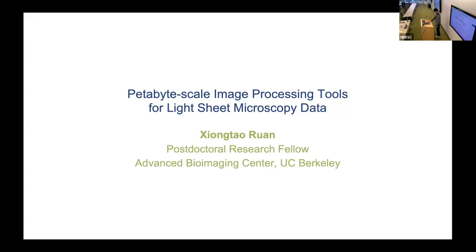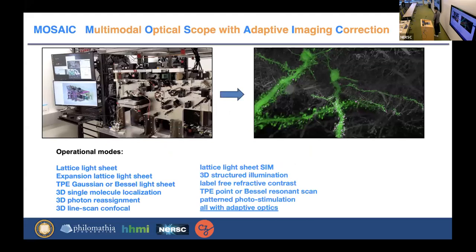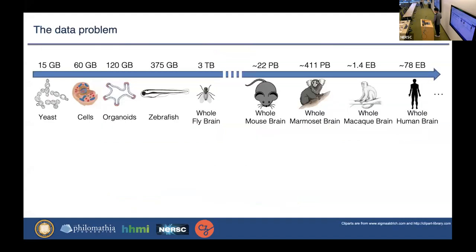In ABC, we are developing cutting-edge microscope techniques, advanced imaging processing tools, and applying them to complex biological problems with collaborators from all over the world. We have built two advanced multifunctional microscopes that enable faster 3D high-resolution imaging. These microscopes have more than 10 imaging modalities, all with adaptive optics, and are imaging more than 10 times faster than their predecessors. This allows us to image more complicated biological samples, such as the whole fly brain or potentially the whole mouse brain, in high 3D resolution.